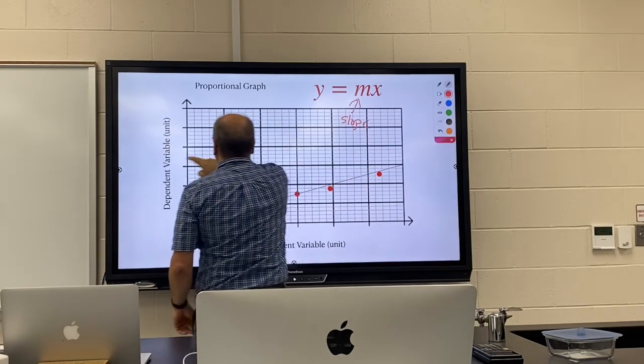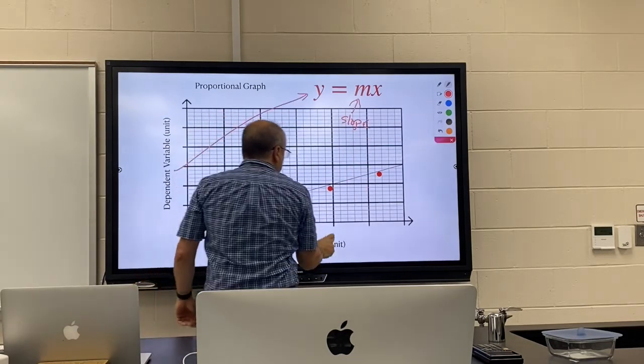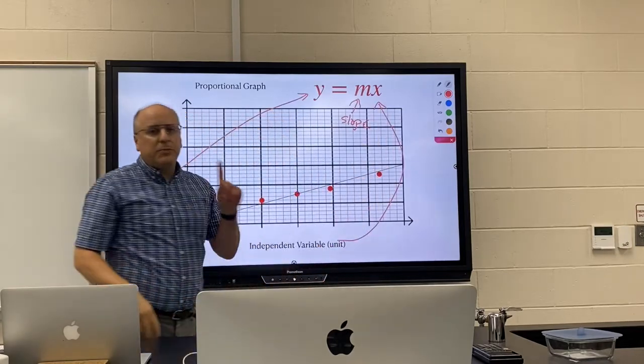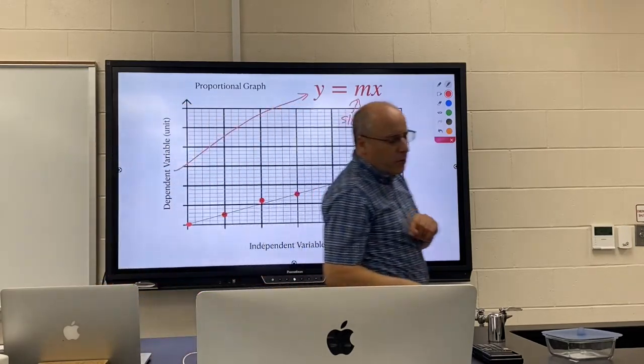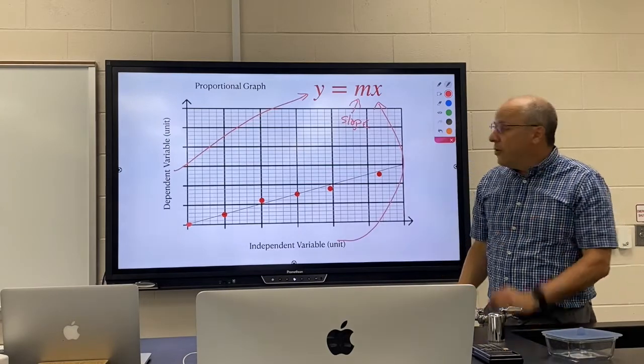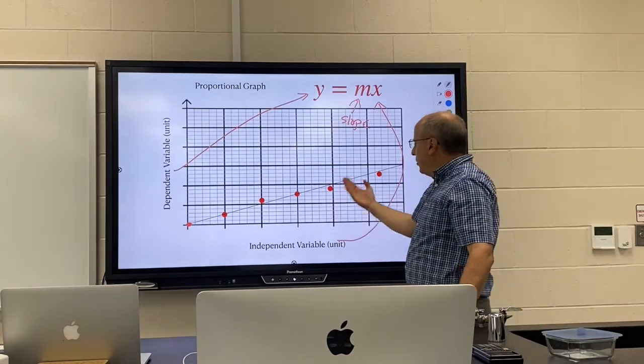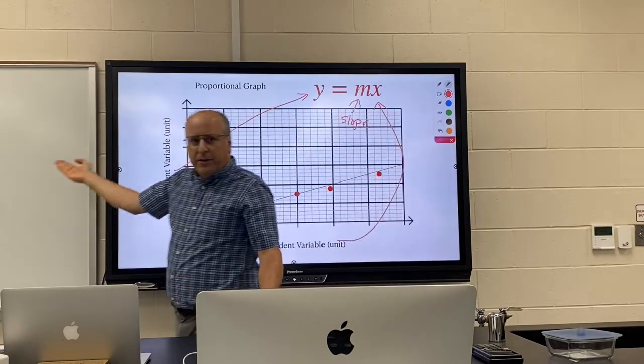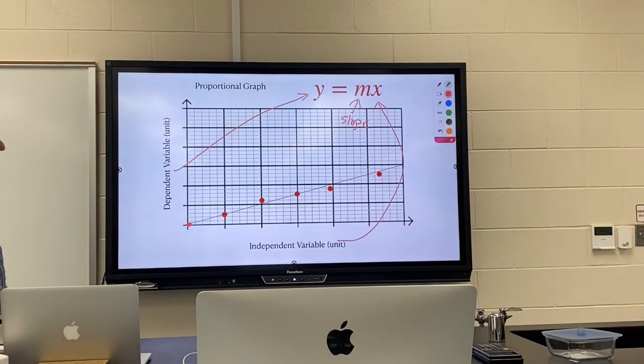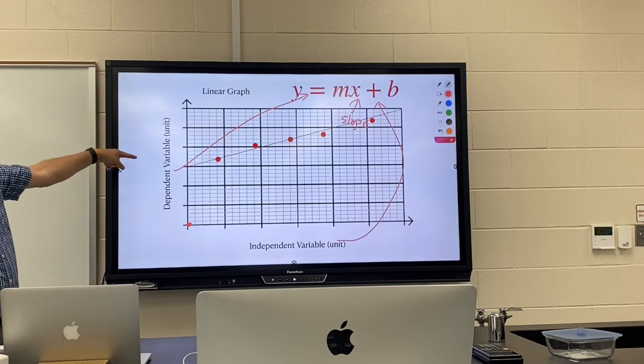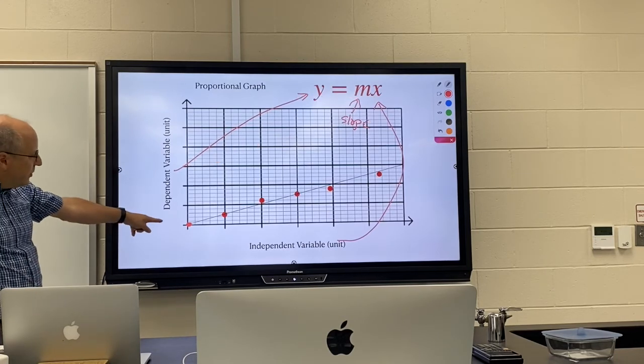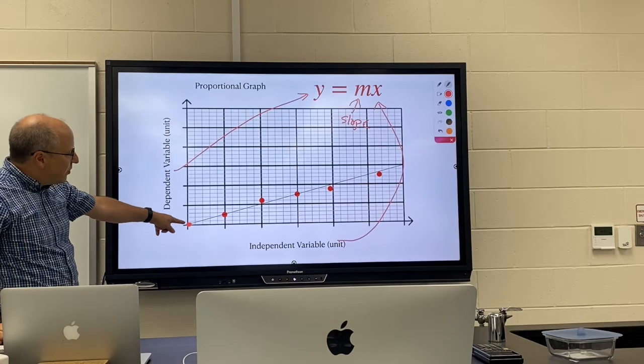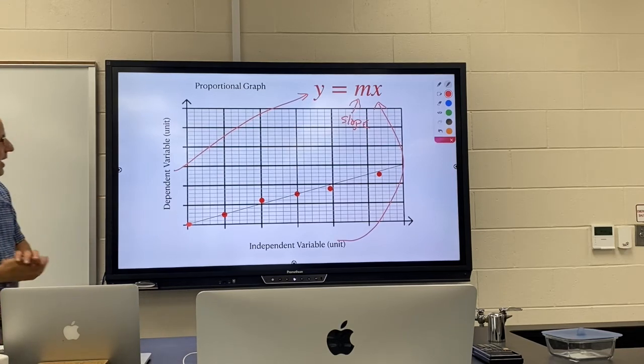One special property of a proportional graph that you should know is that if you double your x value, it will double the y value. That is true for proportional; it is not true for linear. This is the more common type of graph. Okay, doubling the x doubles the y.